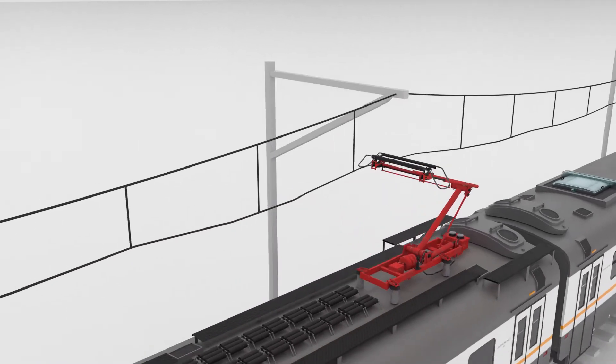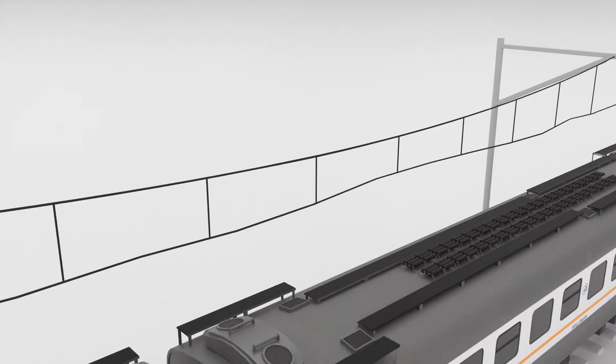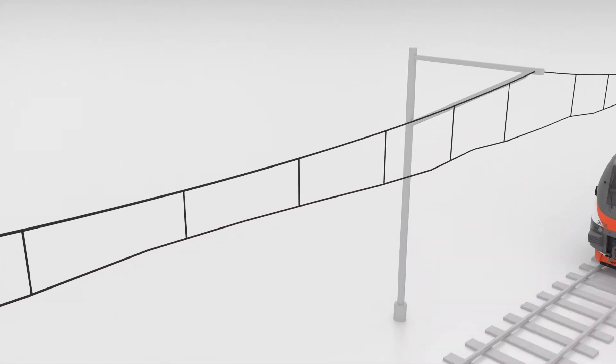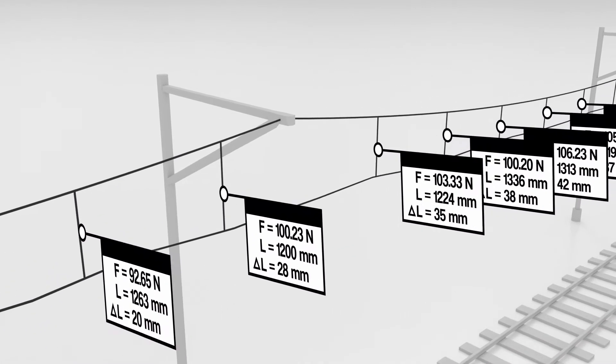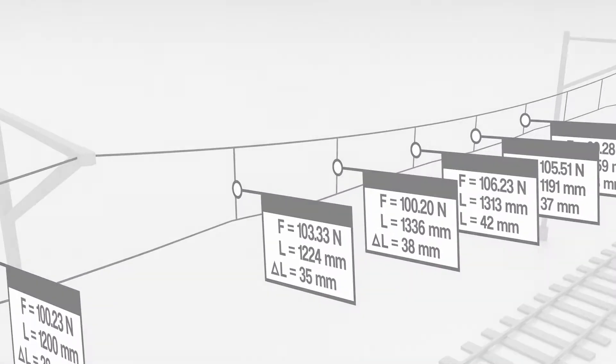Using a mathematical model, the force applied to each dropper is calculated. By applying these forces' reaction to the messenger cable, the current length and the required change in each dropper will be obtained.